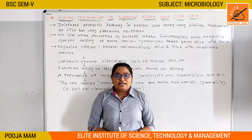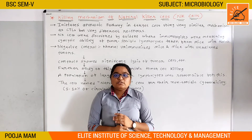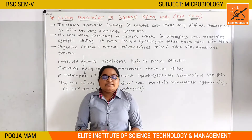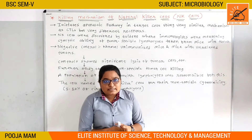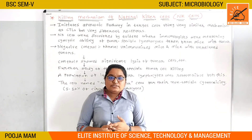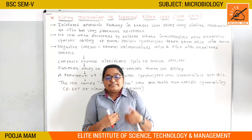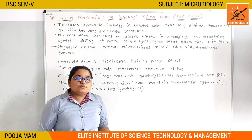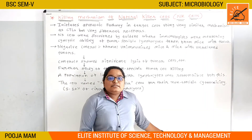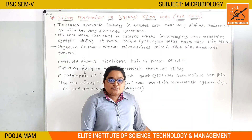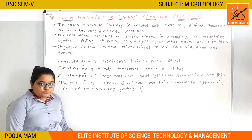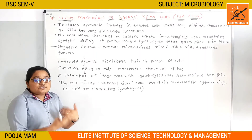Hello friends, welcome back to the class. In our last lecture, we discussed about the killing mechanism of the cytotoxic lymphocytes. Now we will discuss about the second type of cytotoxic cells, that is the natural killer cells. The natural killer cells are part of the innate immunity and the cytotoxic lymphocytes are part of the adaptive immunity. Natural killer cells are one type of lymphocyte cells, just like the cytotoxic cells.